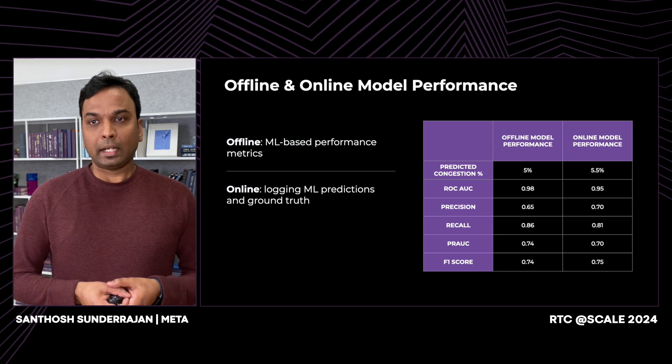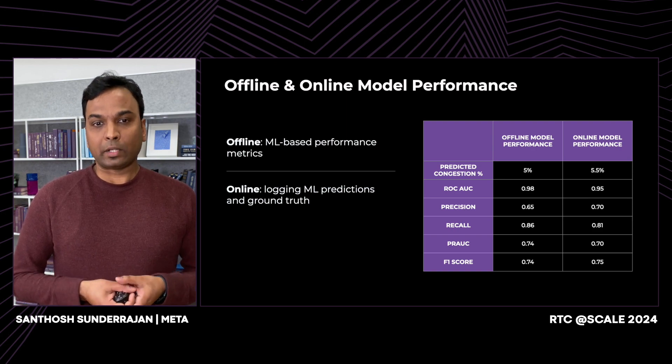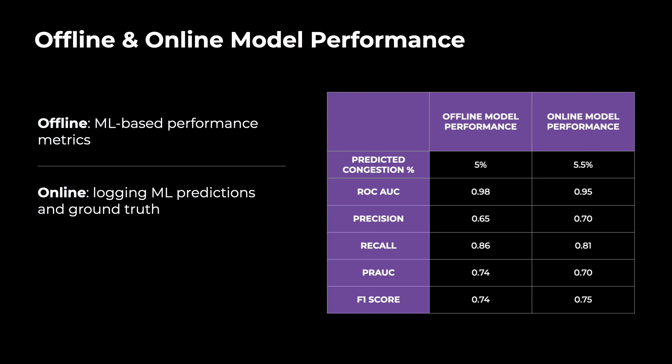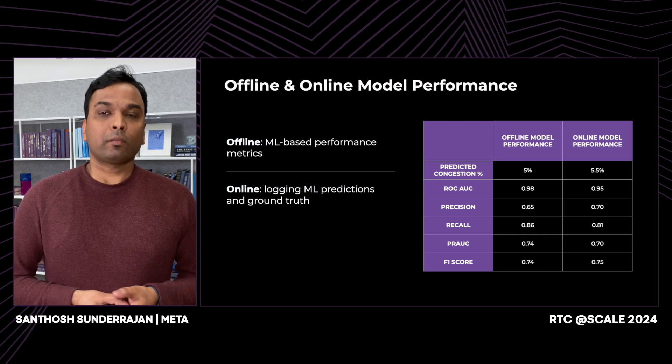Once the model is trained, we evaluated it on the test set using metrics like F1 score, AUC, precision, and recall. We predicted congestion for 5.5% of cases in our offline test. We also log ground truth for model inference on the client side — based on the past prediction, in the future window we add whether congestion occurred. Comparing offline and online results, the predicted congestion percentages and AUC, precision, and recall scores are similar, confirming the model predicts congestion closely aligned with offline training.